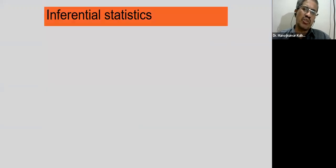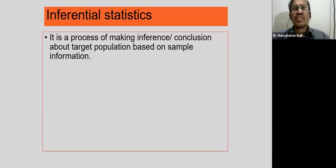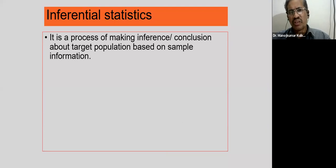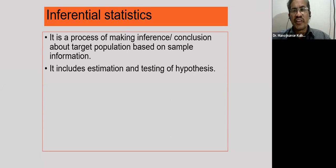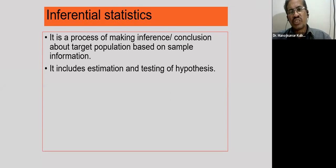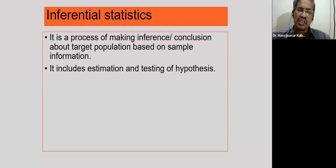If you are doing an analytical or experimental study, it includes testing of hypothesis. Inferential statistics refers to the process of making inferences or conclusions about the target population based on sample information. You conducted a study on a sample basis, and from those findings you determine whether they are generalizable to the entire target population. This includes mainly estimation and testing of hypothesis. Estimation means summarizing in terms of mean or proportion — it can be point estimate or interval estimate.